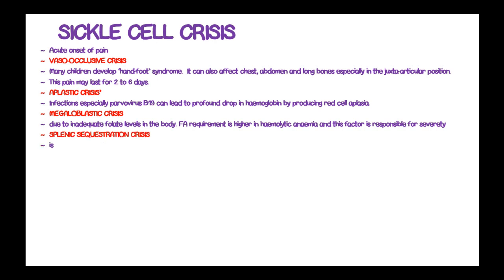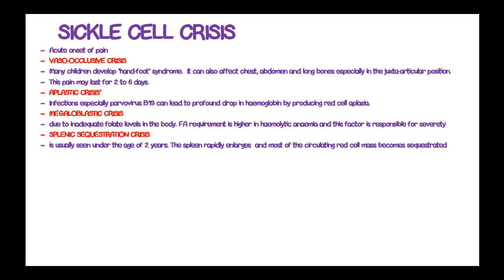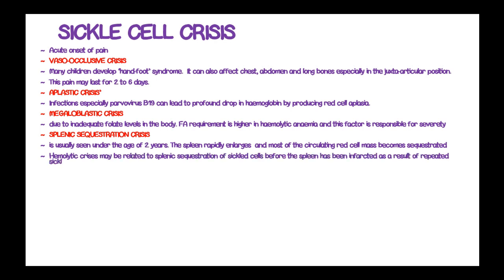Splenic sequestration crisis is usually seen in children under the age of 2 years, in which the spleen rapidly enlarges and most of the circulating red cell mass becomes sequestrated. Hemolytic crisis may be related to splenic sequestration of sickle cells before the spleen has been infarcted, as a result of repeated sickling or co-existent disorders such as glucose-6-phosphate dehydrogenase deficiency.